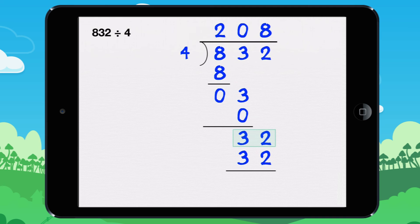We need to find the remainder. 32 minus 32 equals 0. 832 divided by 4 equals 208.